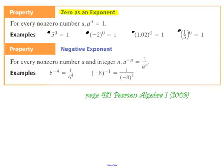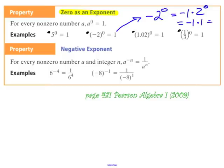Here's a side example related to negative 2 to the zero equals 1. If we write this without parentheses — as the opposite of 2 to the zero — this equals negative 1, because this is really negative 1 times 2 to the zero, which is negative 1 times 1, giving negative 1. If a negative number is not in parentheses, you're only taking the whole number to the zero power.